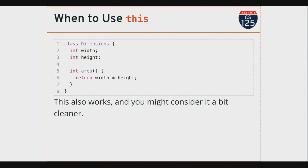So how does Java run this code? This is different than the functions we've looked at before. You might wonder, if Java is compiling this area function, it's using a variable called 'width' — it takes no arguments, and there are no local variables declared. So how can it refer to width and height? Where do those variables come from?